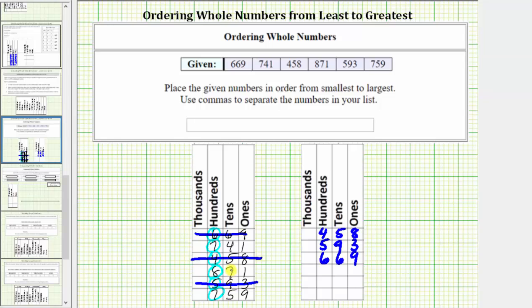Looking at the remaining three numbers, notice how the least or smallest value in the hundreds place value is a seven, but there are two numbers that have a seven in the hundreds place value, and therefore we need to compare the digits in the tens place value to determine which number is smaller. Here we have a four in the tens place value, and here we have a five in the tens place value.